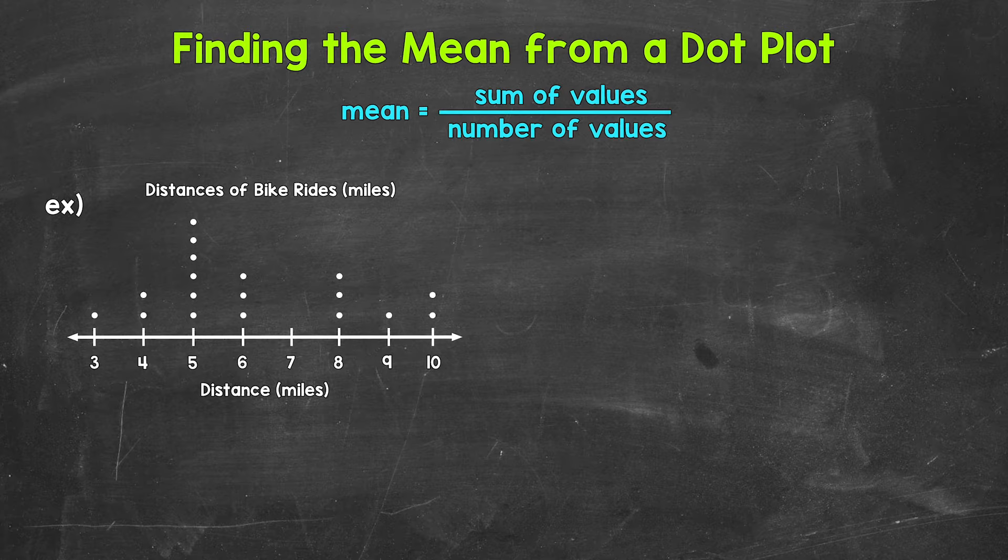Let's jump into our example where we have a dot plot displaying data about bike ride distances. Let's say that a person tracked the distances of their bike rides for a month. Here are the results. Now in order to find the mean, we need to add all of the distances and then divide by the number of bike rides there were. So the mean equals the sum of the values, the distances.